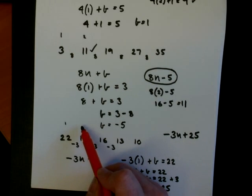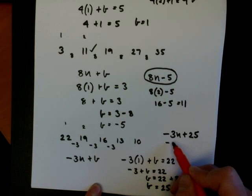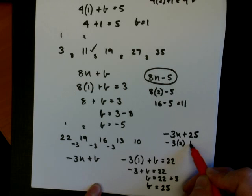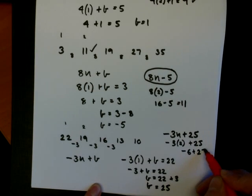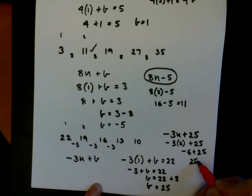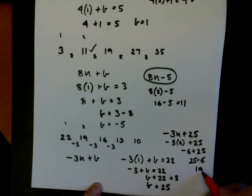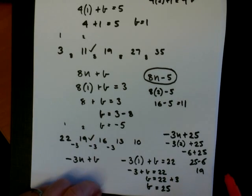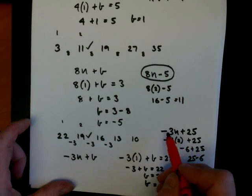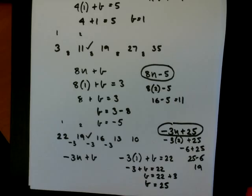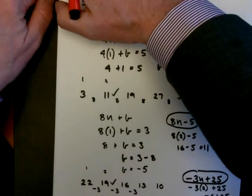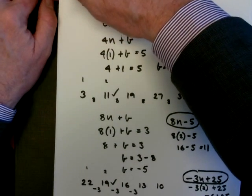If we take the second term, minus 3 times 2 plus 25 will be minus 6 plus 25, which is the same as 25 take 6, which is 19. So we now know we've got the correct nth term, which is minus 3n plus 25. And that ends this short lesson on finding the nth term.